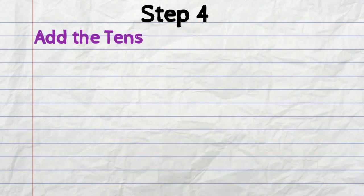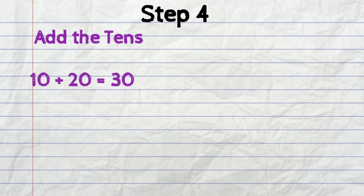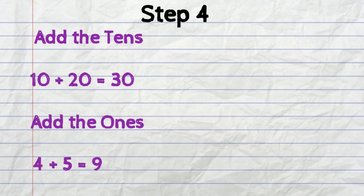Step number four. Add the tens first. So 10 plus 20 equals 30. Then add the ones. 4 plus 5 equals 9.